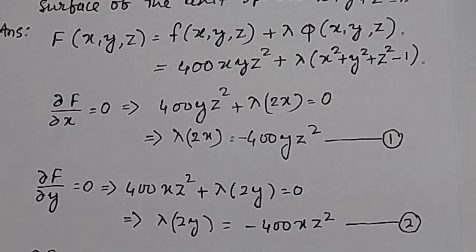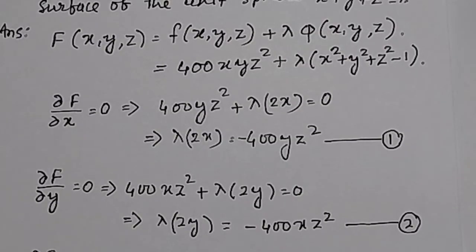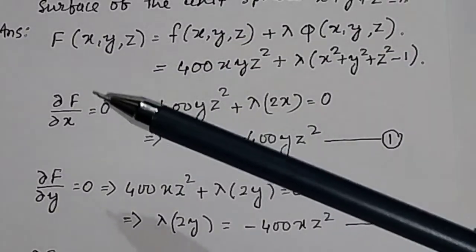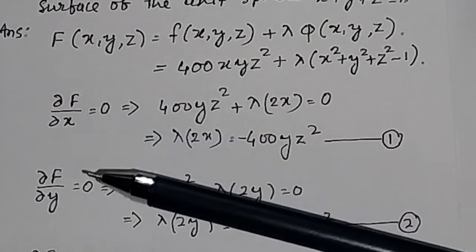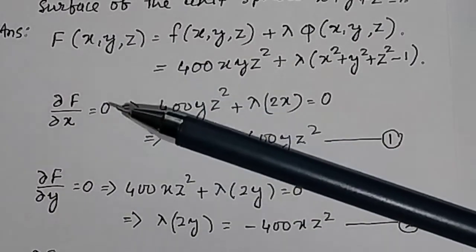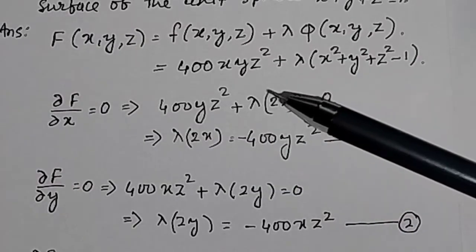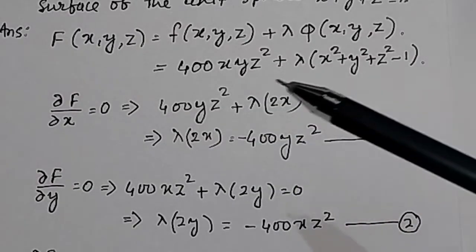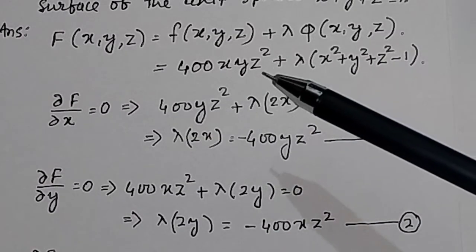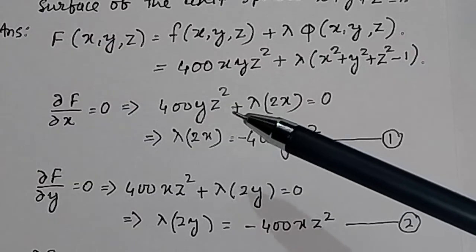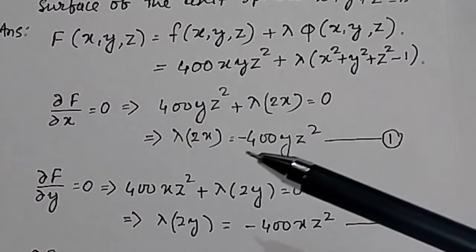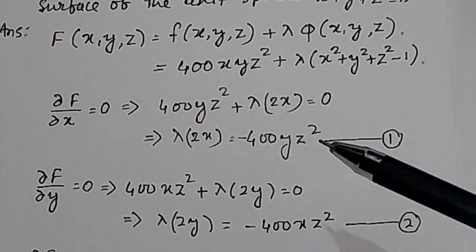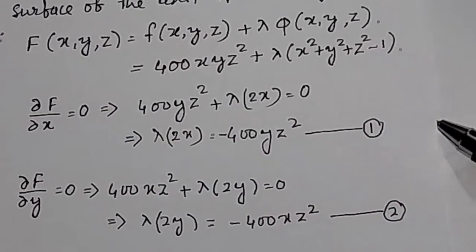As discussed in the previous video, to find the constrained maximum we take the partial derivative of f with respect to x and set it equal to 0. The partial derivative of 400xyz² with respect to x is 400yz², and for the constraint term it is λ·2x, so: 400yz² + λ·2x = 0, giving λ·2x = −400yz². Call this Equation 1.